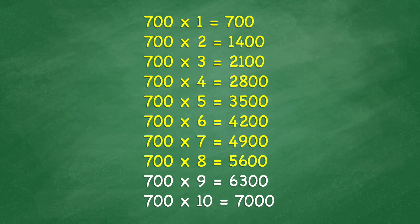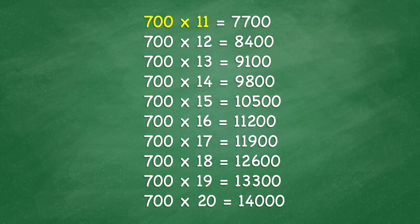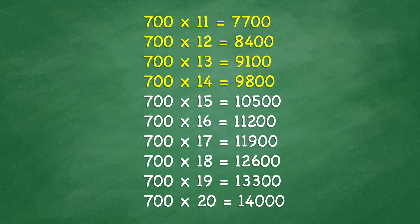700 times 9 equals 6,300. 700 times 10 equals 7,000. 700 times 11 equals 7,700. 700 times 12 equals 8,400. 700 times 13 equals 9,100. 700 times 14 equals 9,800. 700 times 15 equals 10,500.